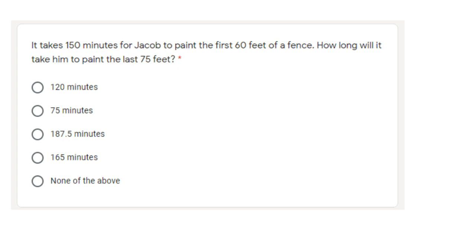Problem number two asks you about a direct variation. This is a direct because if you have more fence to paint, it's going to take you more time. So as feet increases, time increases. Feet could be x in this case, y would then be the most likely time.